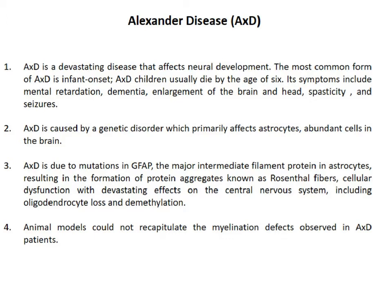Alexander disease is caused by a genetic disorder that primarily affects astrocytes, the star-shaped cells in the brain. It is caused by a mutation in a gene called GFAP, which is the major intermediate filament protein in astrocytes. The hallmarks of the disease include GFAP protein aggregation and Rosenthal fibers, as well as cellular dysfunction including oligodendrocyte loss and demyelination. Although various animal models have been created, no animal model could recapitulate the myelination defects observed in Alexander disease patients.